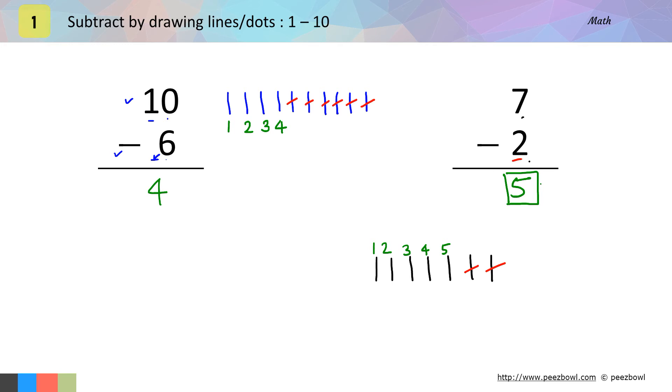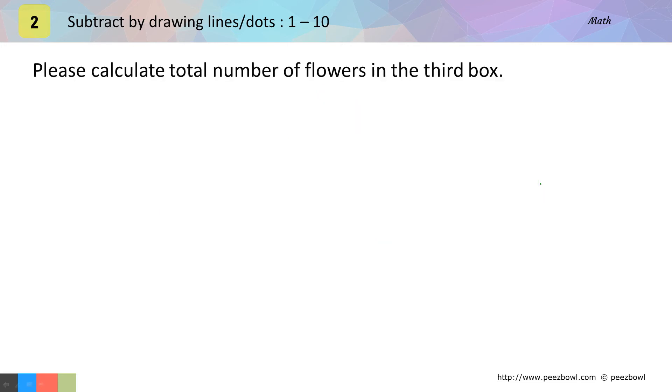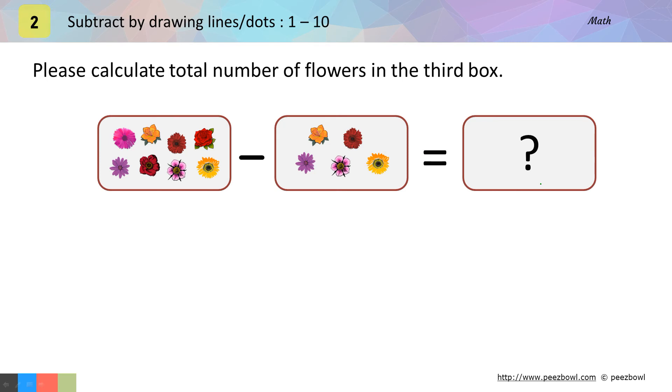I hope this concept is clear to you. Let us take one more example. In this example, we need to find out number of flowers in the third box. For this, we need to count number of flowers in the first box. Then, count number of flowers in the second box. After that, subtract number of flowers in the second box from number of flowers in the first box.